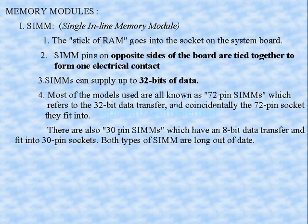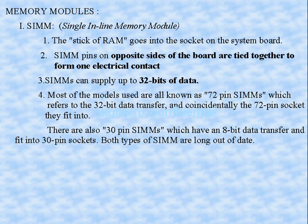This Single Inline Memory Module supplies a maximum of 32 bits of data. Most SIM models used today are 72-pin SIMs, which refers to 32-bit data transfer — out of the 72 pins, 32 bits are used for data transfer, and they fit into 72-pin sockets. There are also 30-pin SIMs, which have an 8-bit data transfer and fit into 30-pin sockets.